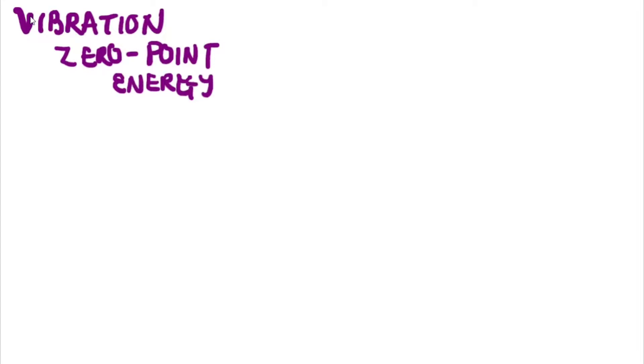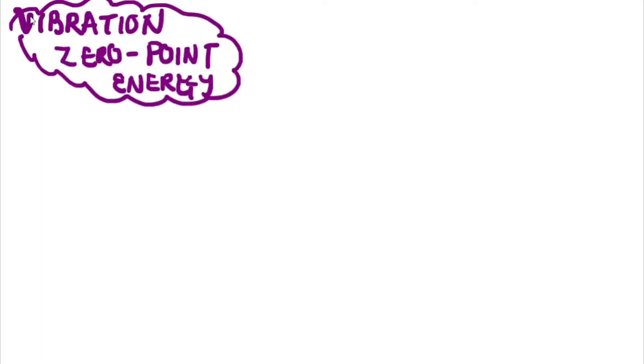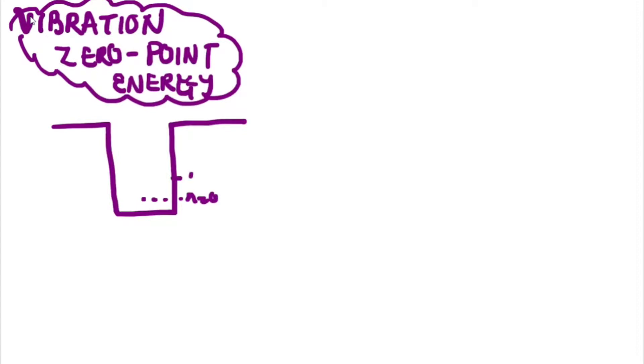In this video we are looking at vibrational zero point energy. This builds on various concepts within quantum mechanics where we explored particle in a box and also the harmonic oscillator. In terms of particle in a box, we recognize that when a particle is within a barrier there are possible energy levels that a particle or molecule can exist at, like n equals zero, n equals one, and so on. A diatomic molecule can behave like an oscillator, going back and forth and maintaining a particular bond distance.